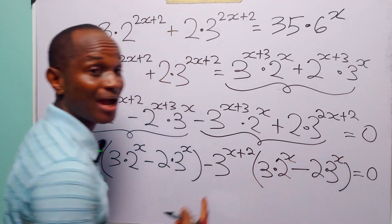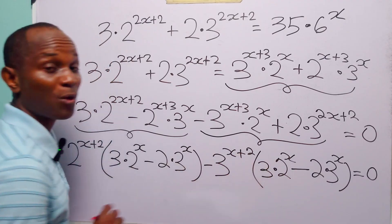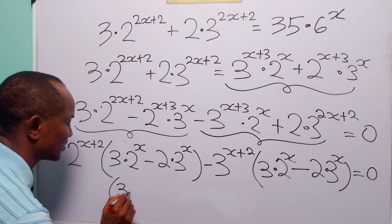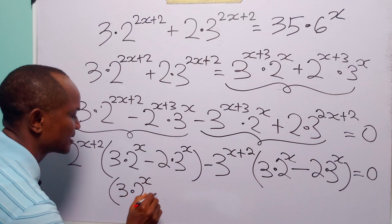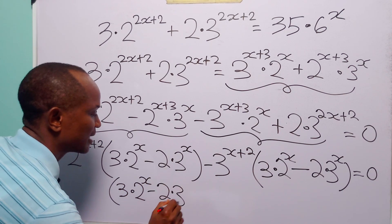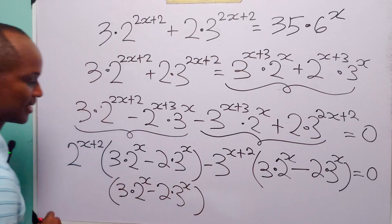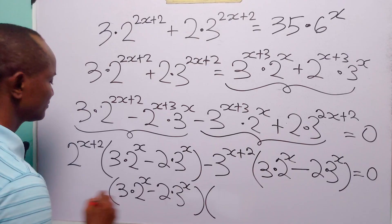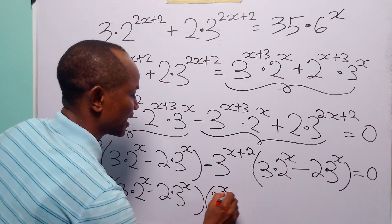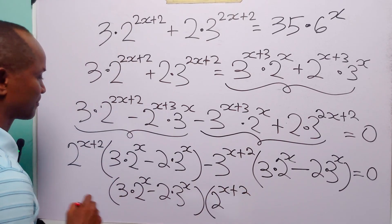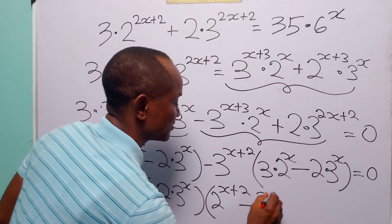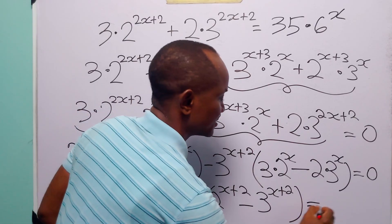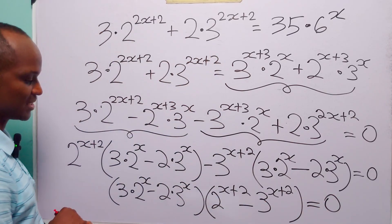Combining these results, we factor the left hand side into two groups: the first factor is (3 times 2 to the power x minus 2 times 3 to the power x), and the second factor is (2 to the power x+2 minus 3 to the power x+2). Their product is equal to 0.